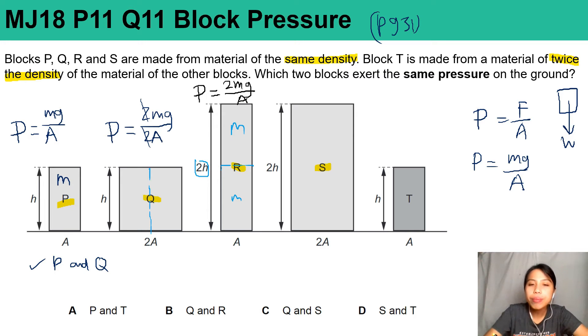The next one, whoa, this is big. It looks like double the height but also double the cross-section area. So you could assume there's like four parts of this stuck together, four parts of P stuck together.